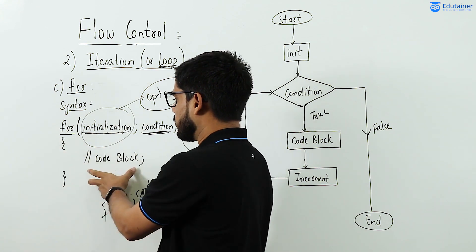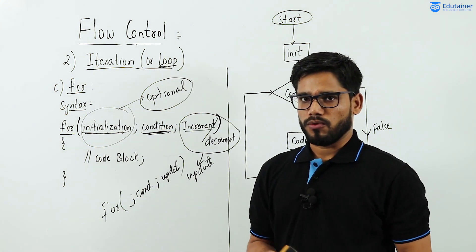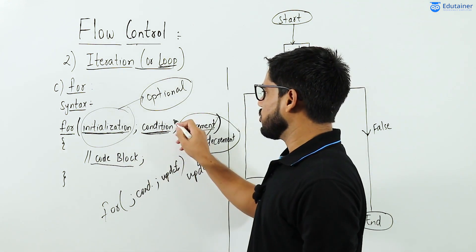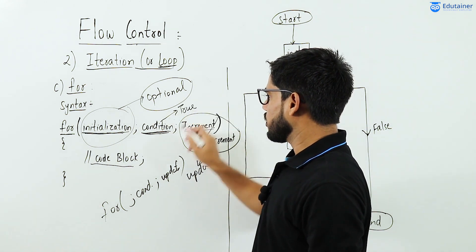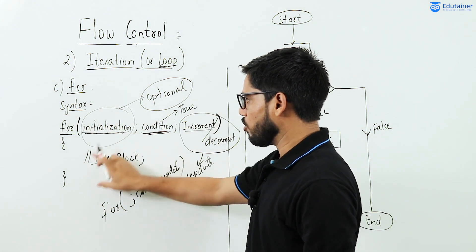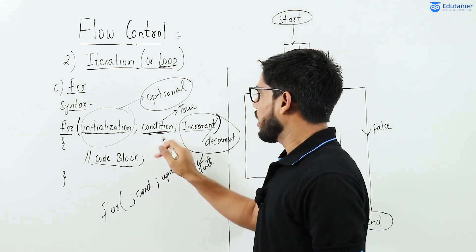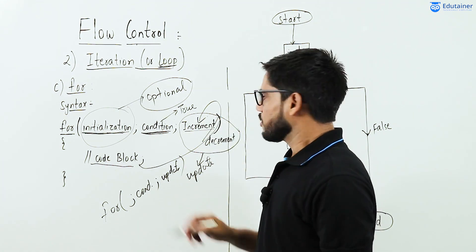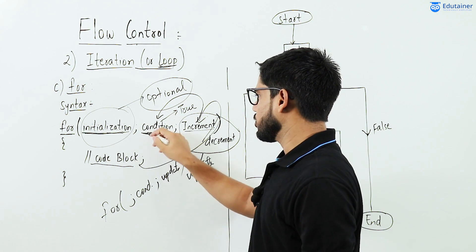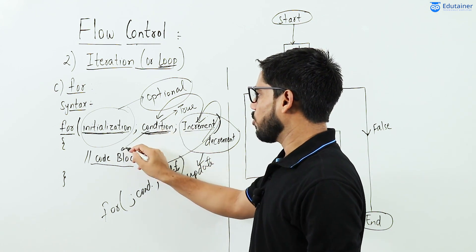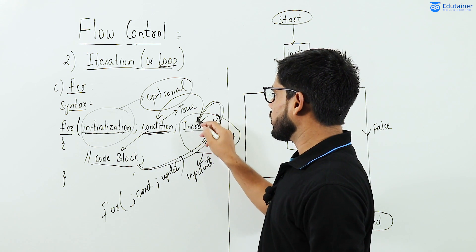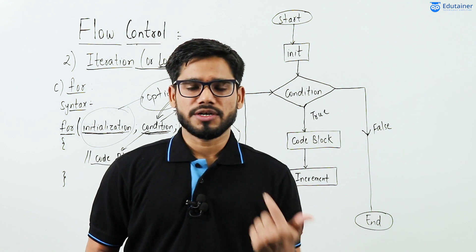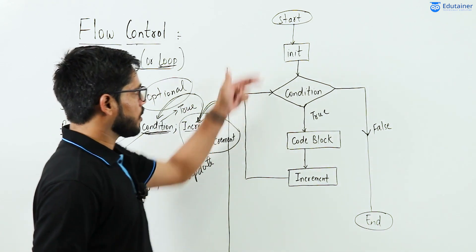Inside the for loop body, there will be a number of statements — a code block. This code block executes when the condition is true. When condition is true, we enter the for loop body, execute the code block, then go back and perform increment or decrement, then check the condition again. This cycle keeps repeating until the condition becomes false.